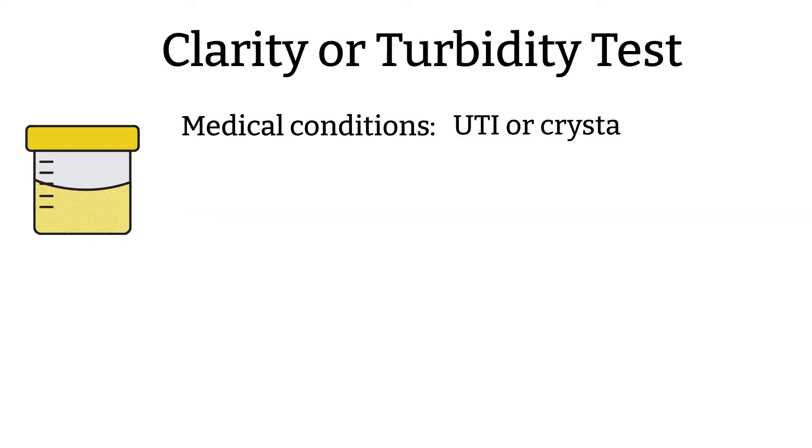Clarity or turbidity test. Normal urine is clear, but can be cloudy due to medical conditions like UTI or precipitate crystals in urine, which we will be talking about in microscopic of the urine analysis.